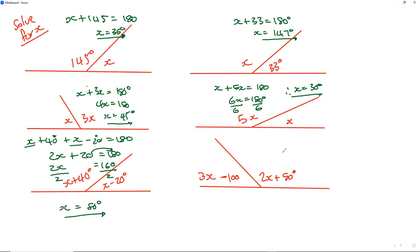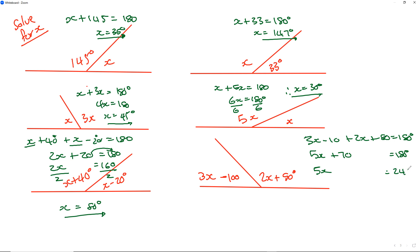The last one: 3x minus 10 plus 2x plus 80 equals 180. 3x plus 2x is 5x; minus 10 plus 80 is 70. So 5x plus 70 equals 180, meaning 5x equals 110. Dividing by 5 gives x equals 22 degrees.